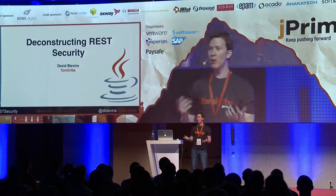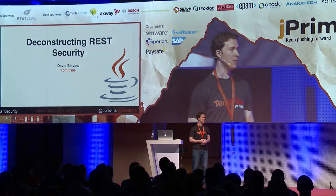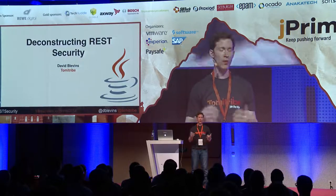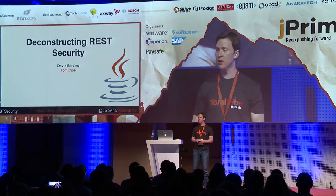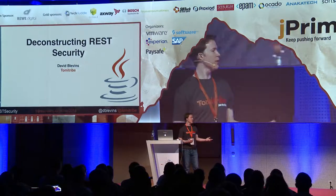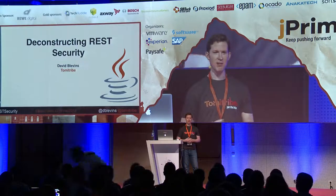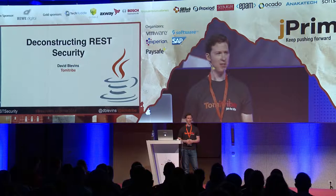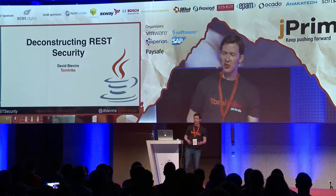My name is David Blevins. I'm with a company called TomEE Tribe and we do a lot of stuff in the middleware space with Jakarta EE and MicroProfile. We're one of the people behind Apache TomEE, which is kind of the enterprise version of Tomcat. We rolled out TomEE with a big customer a couple of years ago and they looked at us and said 'great, now it's running — how do we secure this thing?' And we said 'Basic Auth' — so of course that doesn't work.